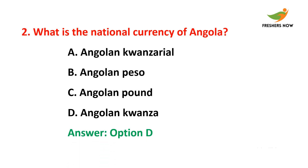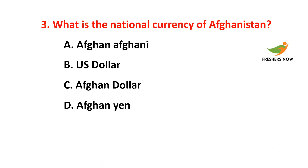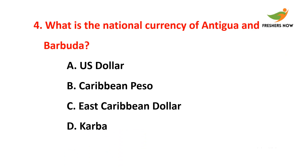The answer is option D — Angolan kwanza. Third question: What is the national currency of Afghanistan? The answer is option A — Afghan afghani. Fourth question: What is the national currency of Antigua and Barbuda? The answer is option C — East Caribbean dollar.